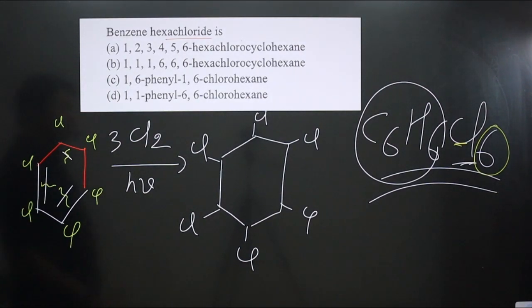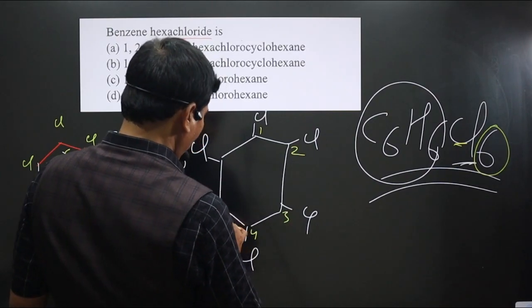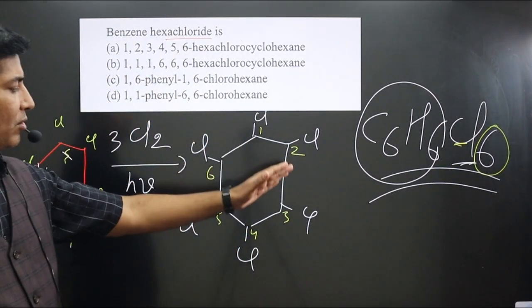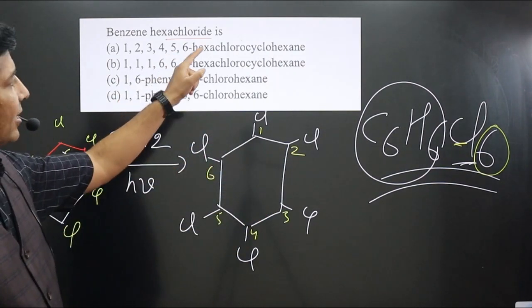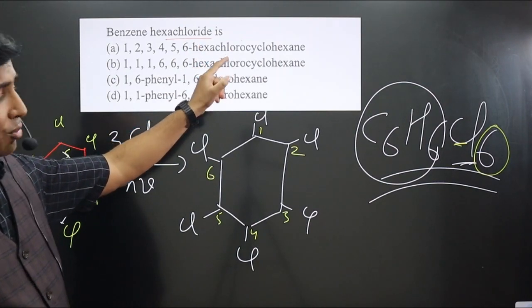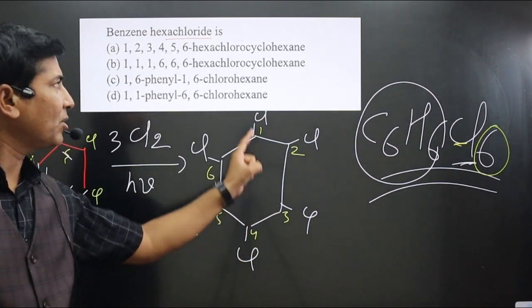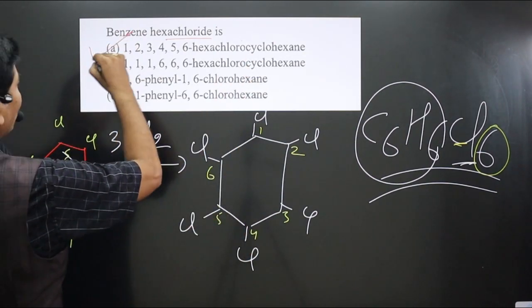Now when we go for the nomenclatures, you can see we have one, two, three, four, five, and it is C6 there. Branching can be named first - one, two, three, four, five, six halogens are there. Hexachloride because they are in the parent chain and this entire portion is your cyclohexane. You can see first option is correct.